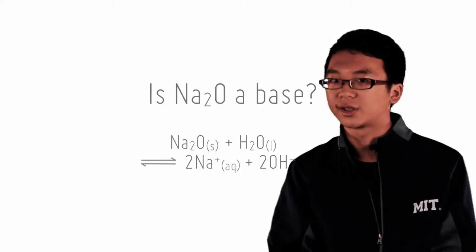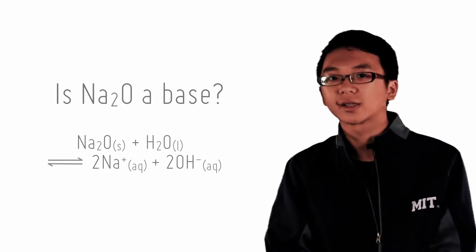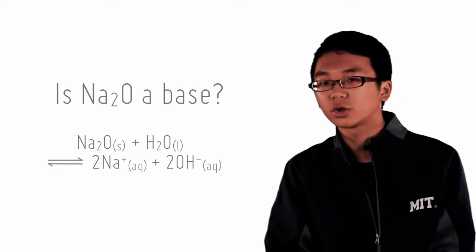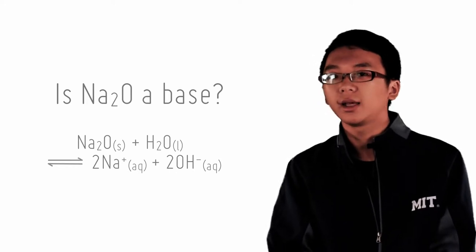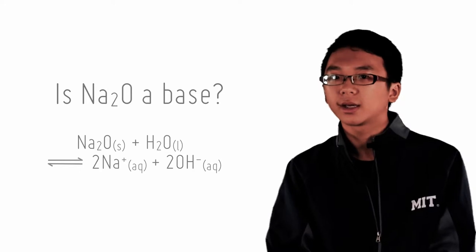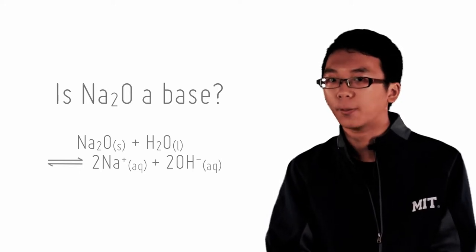For example, an ionic oxide such as Na2O reacts with water to produce two hydroxide ions. But there is no proton transfer to sodium, yet it increases the basicity of the solution. How can we take into account compounds like Na2O being basic?